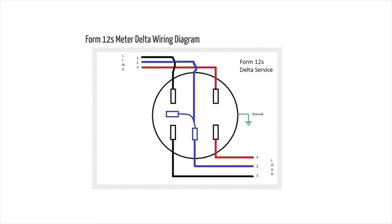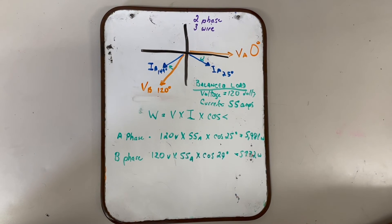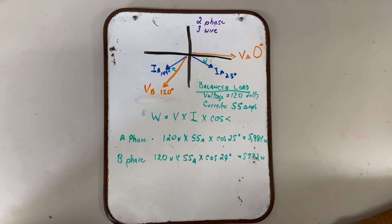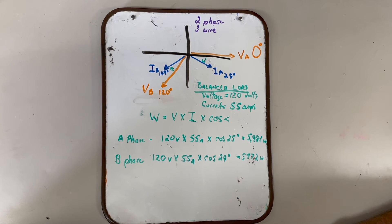12S meter is also used for delta services, three phase three wire services. It's the exact same wire. The only difference is phase to ground. You're going to get the same voltage phase to ground, phase to phase. So if it's in a 240 volt service, you get 240 to ground, 240 to ground, and 240 phase to phase. There's no difference in the wiring and you should get the same voltage.